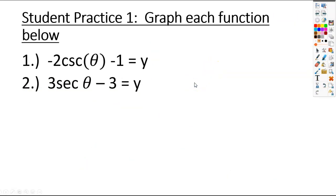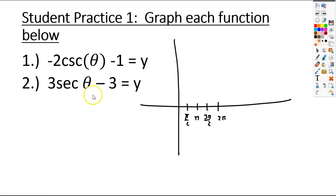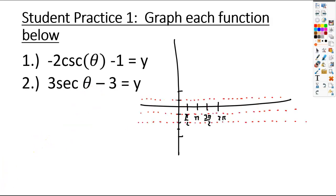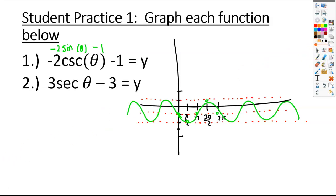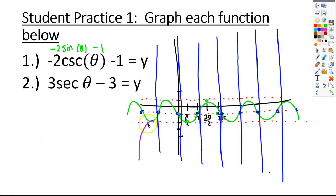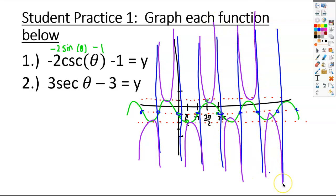Go ahead and pause the video here and give number 1 a try. For number 1, step 1 is to set up your graph. Graph your max, midline, and minimum — the maximum should be at 1, the midline at negative 1, and the minimum at negative 2. Since we're doing cosecant, we graph sine first. Since we have a negative in front, we start at the midline and go down, then continue the pattern. Next, put in your vertical asymptotes, and then graph the actual cosecant graph — the purple little parabola shapes.